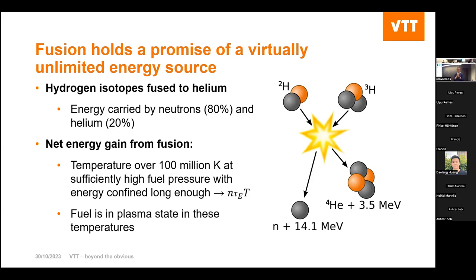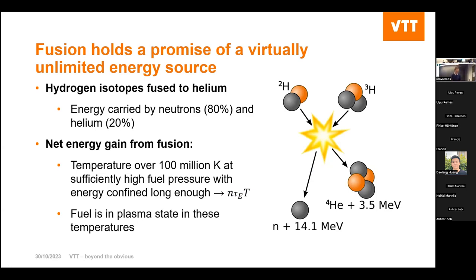You need to reach temperatures up to the order of 100 million degrees at high enough density and pressure for the reaction rate to be sufficient. You need to confine the energy long enough, otherwise you'd spend excessive energy just to keep the fuel heated. This leads to the standard figure of merit: the triple product — density, temperature, and the characteristic energy confinement time. When the fuel reaches ~100 million degrees it's in plasma state, which is why plasma physics is at the very center of fusion energy development.